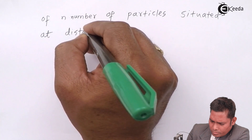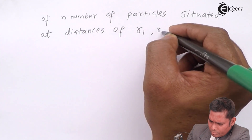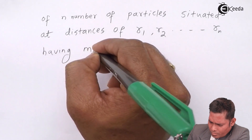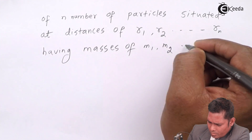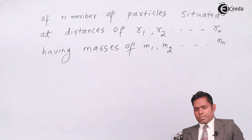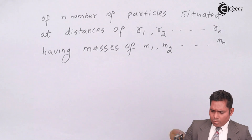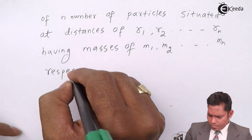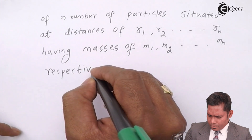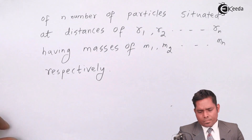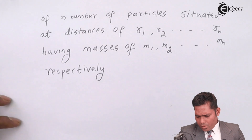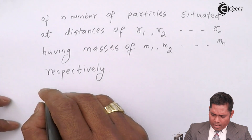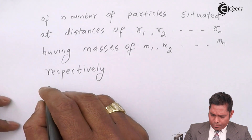The particles are situated at distances R1, R2, and Rn from the axis of rotation, having their masses M1, M2, and Mn respectively.